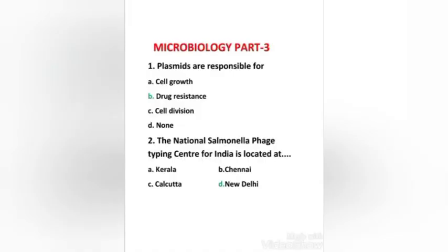First question: plasmids are responsible for — cell growth, drug resistance, cell division, or none? The right answer is option B, drug resistance. A plasmid is a small extra-chromosomal DNA molecule within a cell that is physically separated from chromosomal DNA and can replicate independently. They are small circular double-stranded DNA molecules in bacteria.